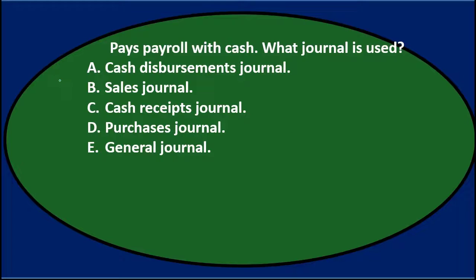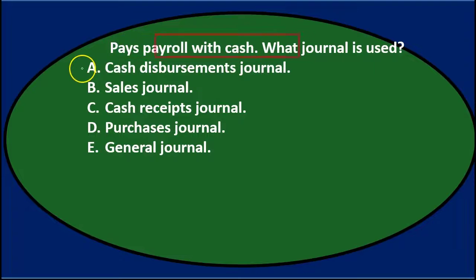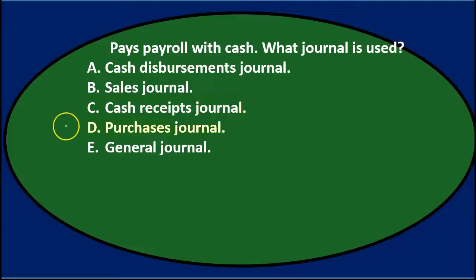Next question: a company pays payroll with cash — what journal is used? A. Cash Disbursements Journal. B. Sales Journal. C. Cash Receipts Journal. D. Purchases Journal. Or E. General Journal.